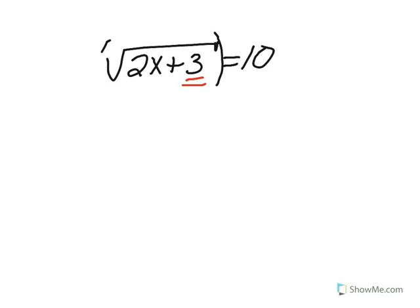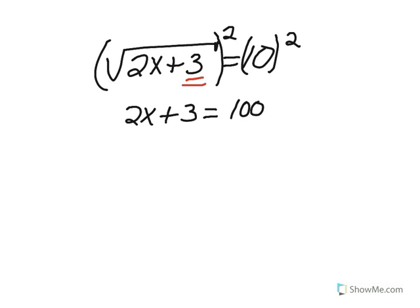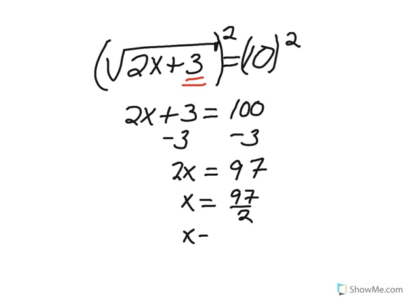So, to start this problem, we are going to square both sides. We have learned previously that when squaring a square root, we just end up with the radicand, which is the value underneath the square root. Now we solve like a regular algebra problem.